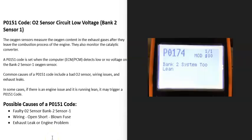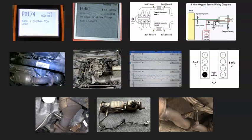Keep in mind that if the engine is running lean you'll usually get other codes as well. For example, if you also have a P0174 — bank 2 system too lean — there may be a problem on the bank 2 side of the engine causing it to run lean. Pay attention to any additional codes. That's a basic overview of how to go about fixing a vehicle with a P0151 code. If you have anything to add, comment below, and if this video helps you, please like, subscribe, and have a good day.